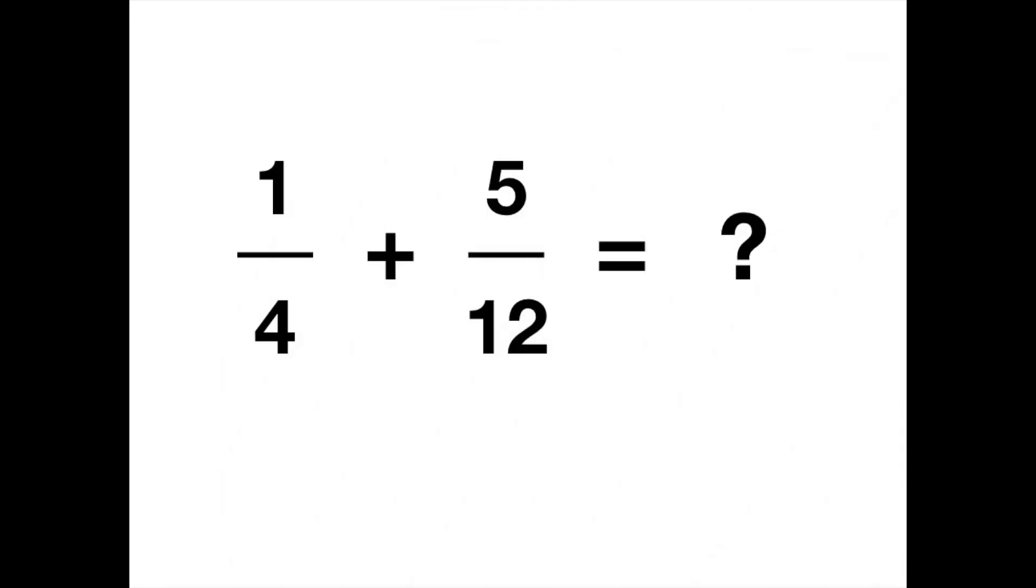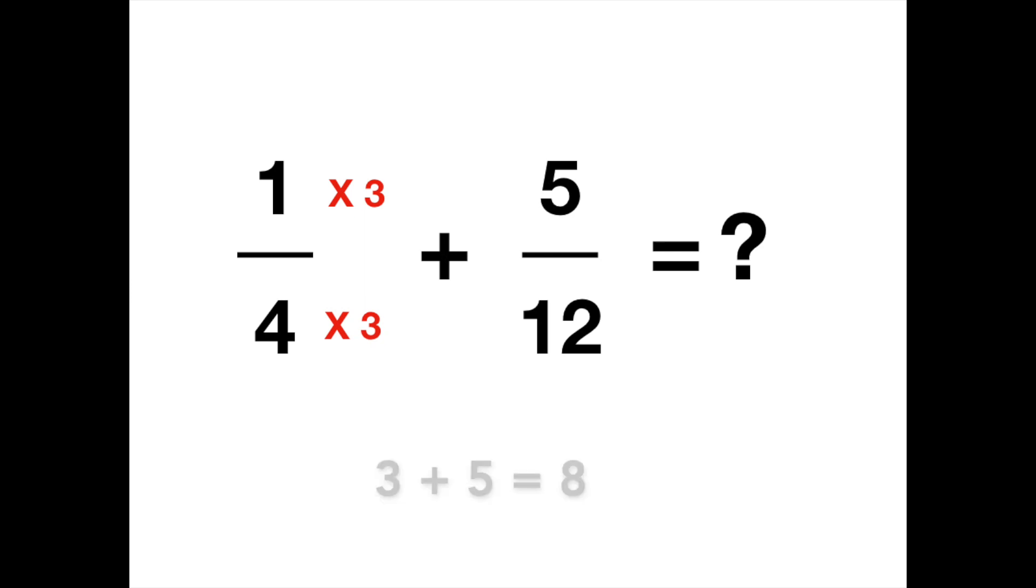Let's try the second question. 1 fourth plus 5 twelfths. It looks a little bit harder because the denominators are different. 4 and 12. You can't add them like this. So, we'll make them the same before we continue. We'll multiply the top and the bottom of the first fraction by 3. 4 times 3 equals 12. 1 times 3 equals 3. Now, we have the same denominators 12. We'll just add numerators 3 and 5. 3 plus 5 equals 8. So, what's the answer? Yeah. 8 twelfths. Good. Great. Excellent. Awesome.